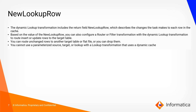The dynamic lookup transformation includes a return port called 'new lookup row' which describes the changes the task makes to each row in the cache. Based on the value of new lookup row, you can configure a router or filter transformation to route insert or update rows to the target table. You can route unchanged rows to another target table or flat file, or drop them. You cannot use a parameterized source, target, or lookup with a dynamic cache.